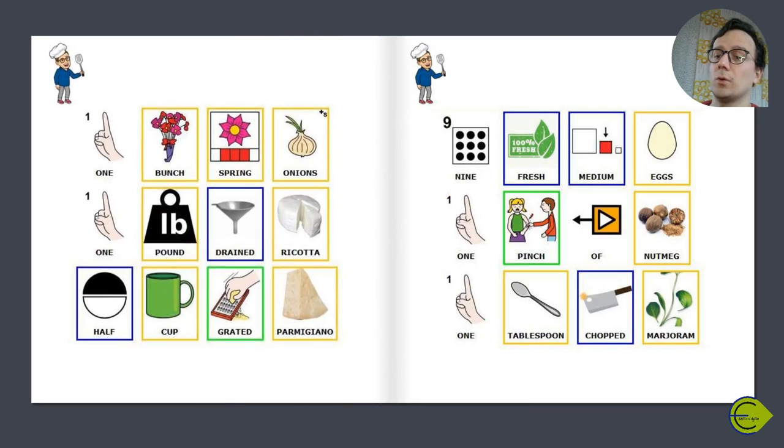1 pound drained ricotta, half cup grated parmigiano, 9 fresh medium eggs, 1 pinch of nutmeg, 1 tablespoon chopped marjoram.